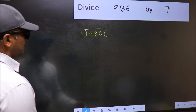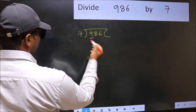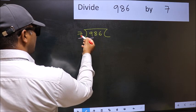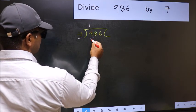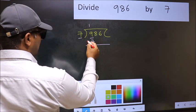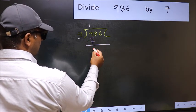Next, here we have 9 and here 7. A number close to 9 in 7 table is 7 once 7. Now you should subtract. 9 minus 7, 2.